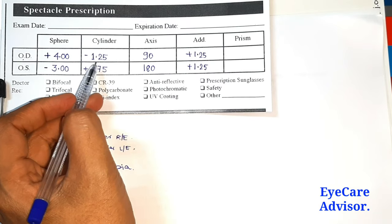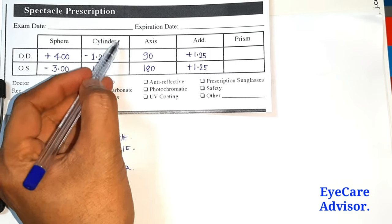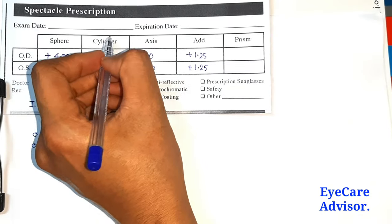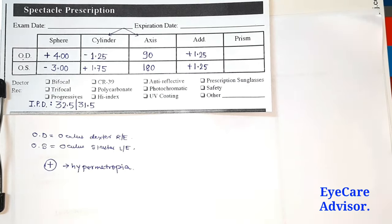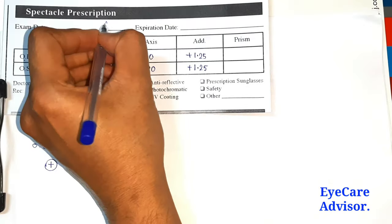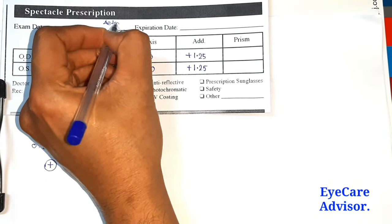The next column you see is the cylindrical prescription. What is the cylindrical part? These two parts will be there: cylinder and axis. These two parts will be there if you are having astigmatism.